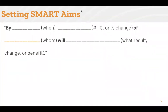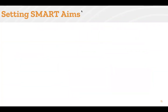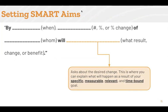The third space, 'whom,' refers to who will benefit from the change — this helps make your AIM more relevant and specific. The last space, 'what result, change, or benefit,' asks about the desired change. This is where you can explain what will happen as a result of your specific, measurable, relevant, and time-bound goal.